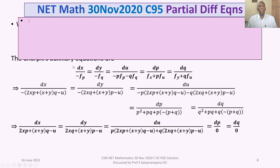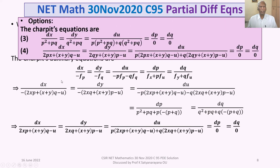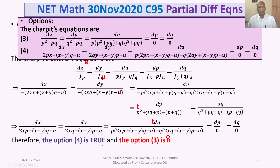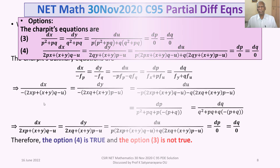Looking at our options, the Charpitt's equations we derived appear in option 4. Option 3 is clearly not true. Therefore option 4 is true and option 3 is false. We continue in the next slide.